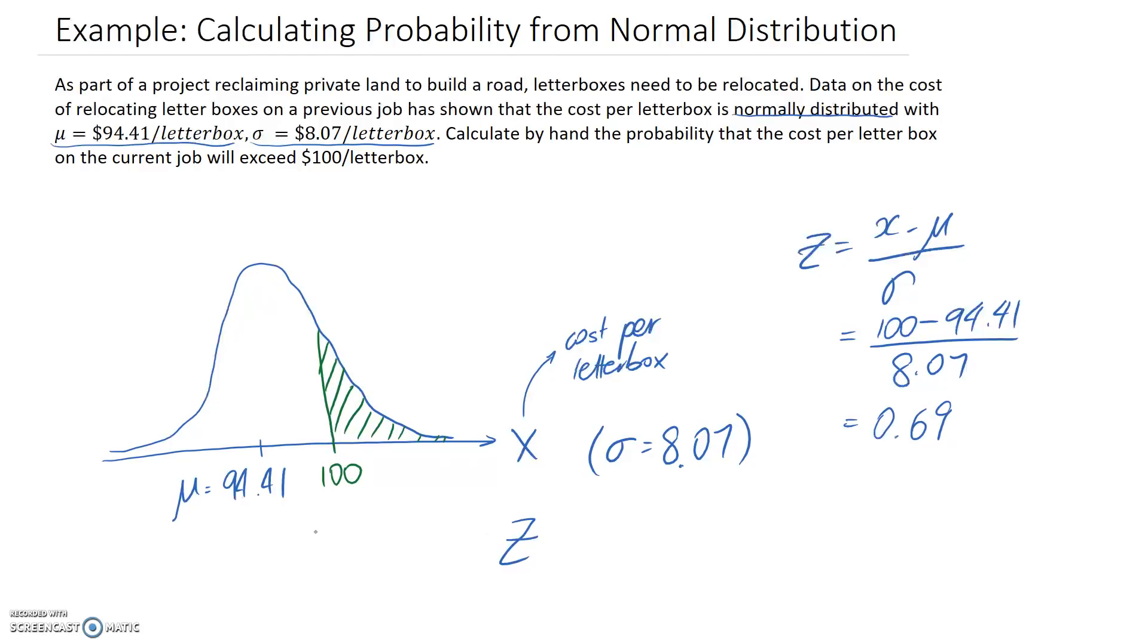If I convert into z, the 100 becomes 0.69. If you convert the mean, it ends up going to 0. The x value would be the mean value 94.41, so you'd end up with a 0 on the top line because the x and the mean would cancel with each other.